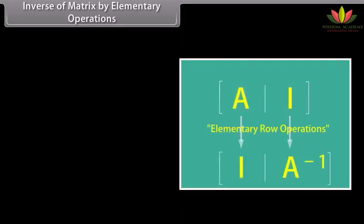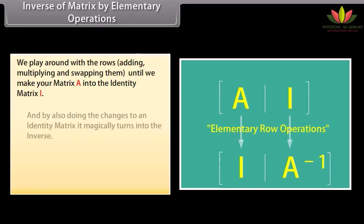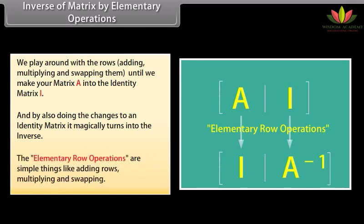Inverse of a matrix by elementary operations: This is a fun way to find the inverse of a matrix. We play around with the rows — adding, multiplying, and swapping them — until we make matrix A into the identity matrix I. By also doing the same changes to an identity matrix, it magically turns into the inverse. The elementary row operations are simple things like adding rows, multiplying, and swapping. Let us go through an example in the next screen.